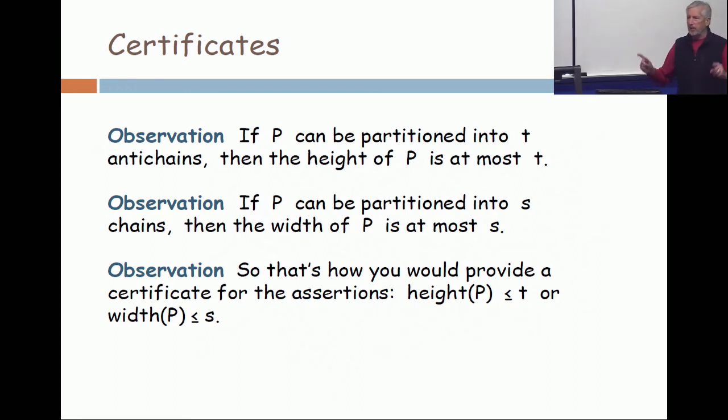So that's how you can provide a certificate for a statement. If you want to claim that the height is at most 23, one way to do it is to simply provide a partition of the poset into 23 anti-chains. The correctness of the partition can be verified by your independent referee. The referee says, yep, that's a partition into 23 anti-chains. And once you have done that, you have indeed validated the statement that the height is at most 23.